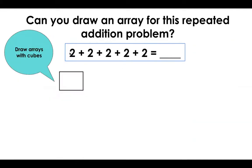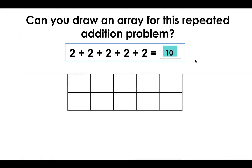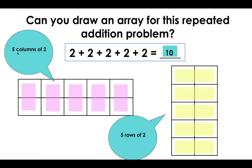Let's take a look at another one: two plus two plus two plus two plus two. Can you draw an array for this repeated addition problem? Remember to draw your array with cubes. Go ahead and pause the video and see if you can figure it out on your own. As I was working through this problem, I first drew one group of two. Then I knew I needed five groups for two plus two plus two plus two plus two. I got this array, which let me know I had ten total cubes. Your array might not have looked like mine — yours could have looked like this too, and that is correct.